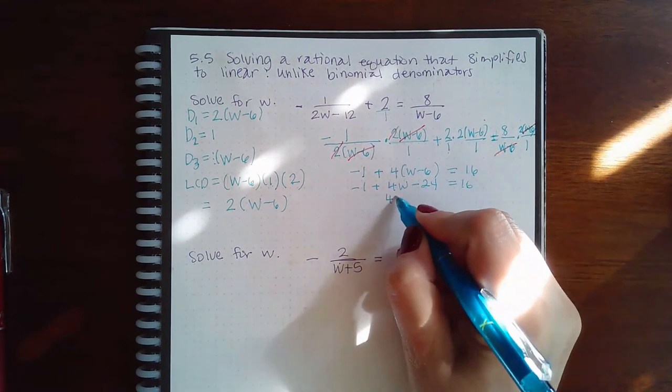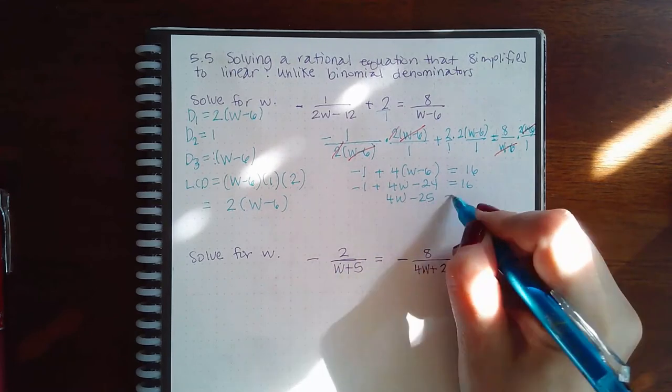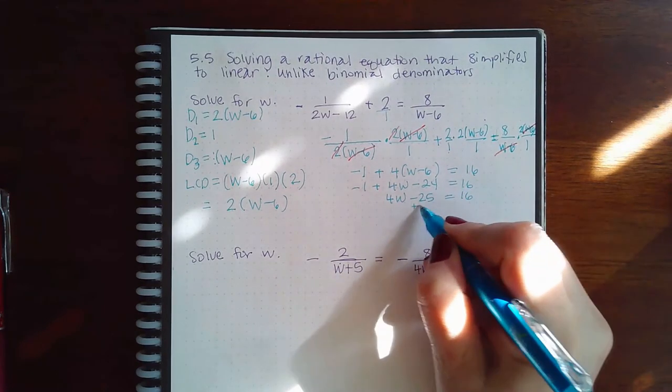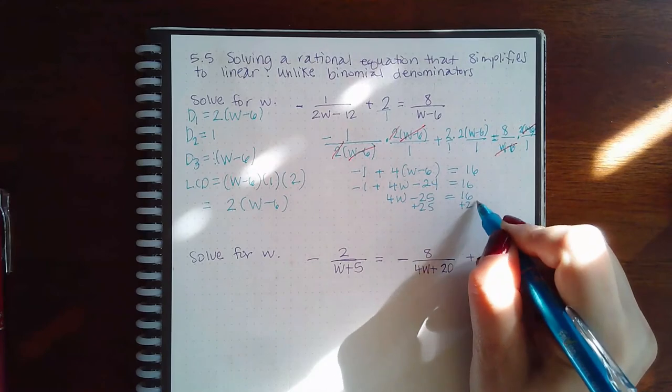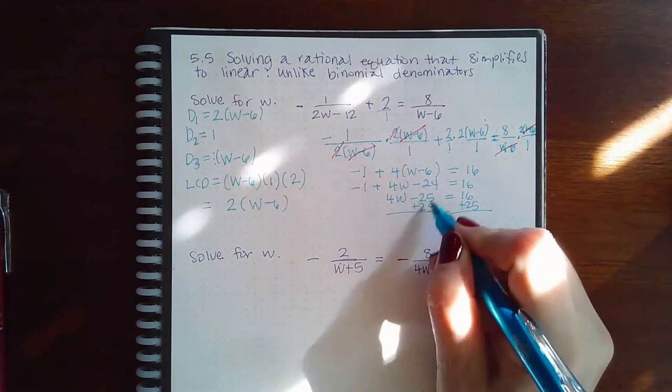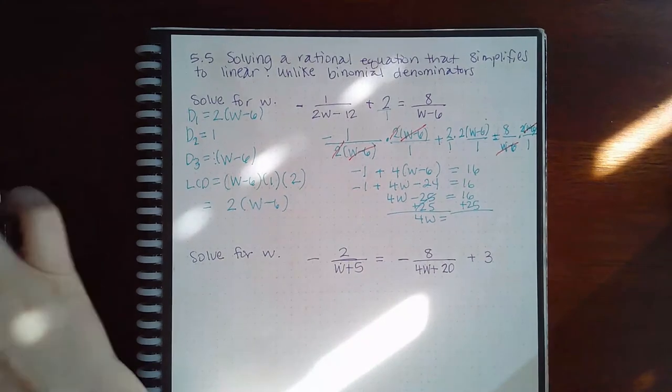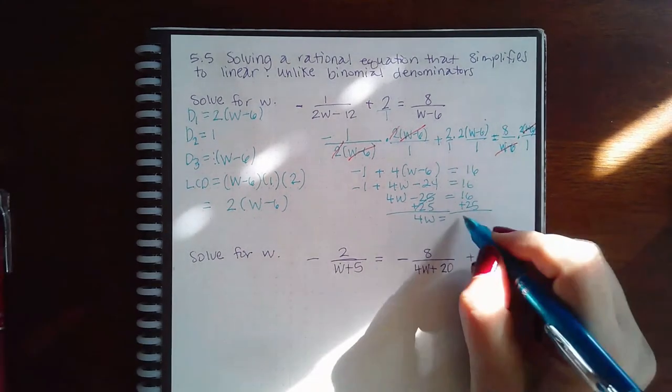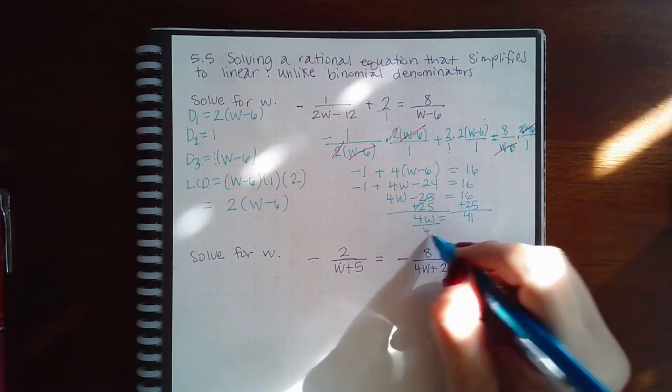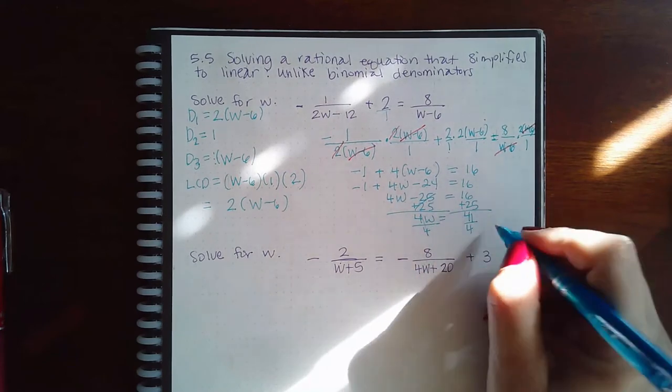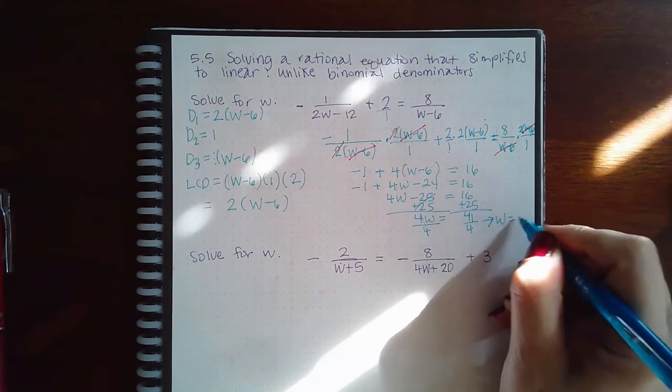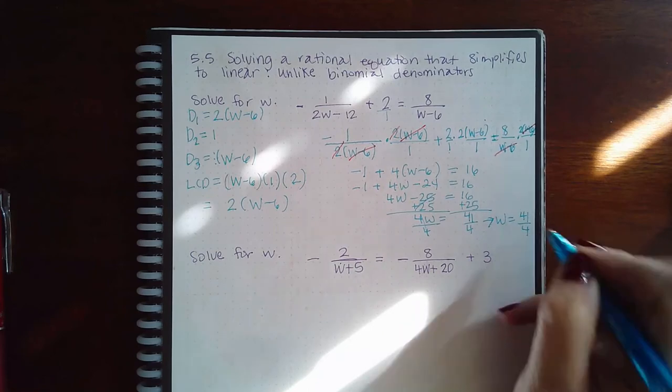Combine my like terms, and then move over the 25. So we get 4W equals 41 divided by 4. And we get W equals 41 over 4, which will not reduce.